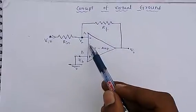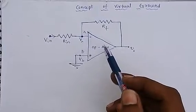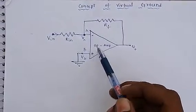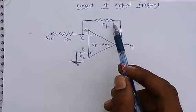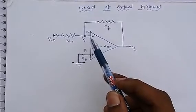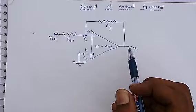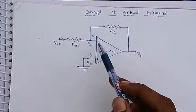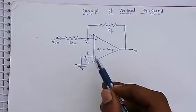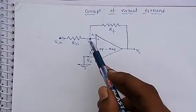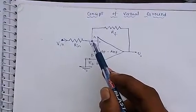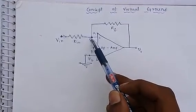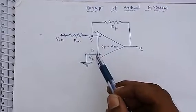The concept of virtual ground. This is the circuit diagram of an operational amplifier. This is the inverting terminal and this is the non-inverting terminal. The feedback resistor is connected across the inverting terminal and the output terminal. The input resistor is connected to the inverting terminal. The non-inverting terminal is connected to ground. Let the voltage at this point be Va and the voltage at this point be Vb.